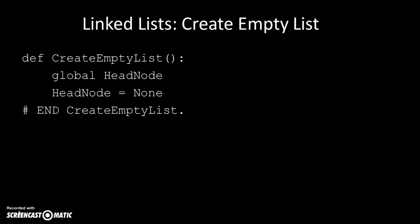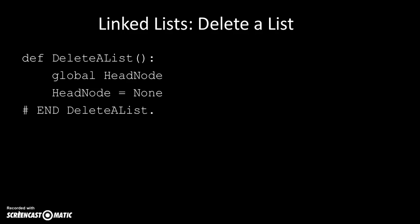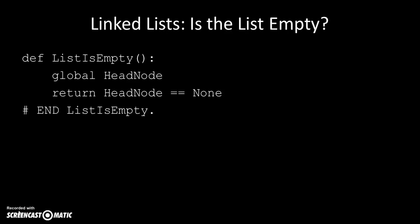How do we create an empty list? We just say head_node = None. How do we delete a list? We assign head_node to be None the same way — if the head node is pointing to nothing, then the list is empty. How do we check if a list is empty? We return whether head_node is equal to None. If it is equal to None, the list is empty; if it's not equal to None, then there are values in the list.